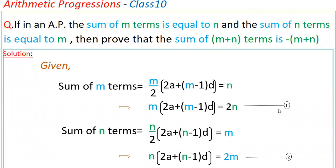Also given, sum of n terms is equal to m. So sum of n terms is n by 2 into 2a plus n minus 1 into d, which is equal to m. So n into 2a plus n minus 1 into d is equal to 2m. This is the second equation.